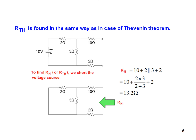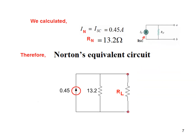Now we need to find Rn. We short circuit the voltage source (set it to 0). Now two resistances are in parallel and the result is added with 10 ohm and 2 ohm in series. So Rn is 10 plus (2 and 3 in parallel) plus 2 ohm, which gives 13.2 ohm. We can now draw the Norton circuit with In = 0.45 ampere and Rn = 13.2 ohm, and connect the load to solve easily.